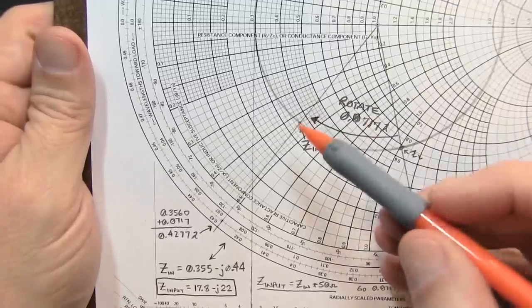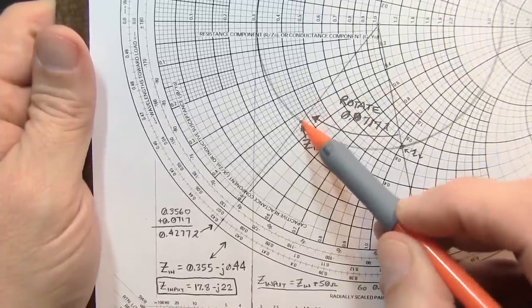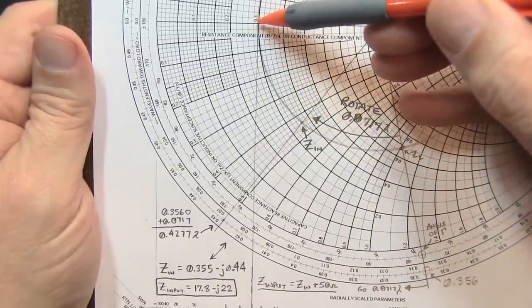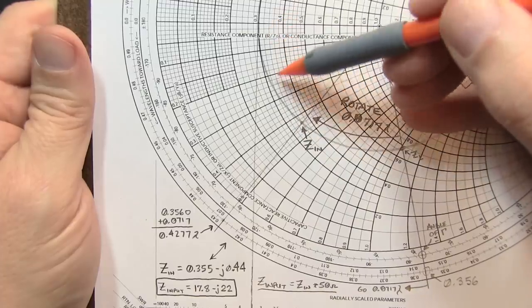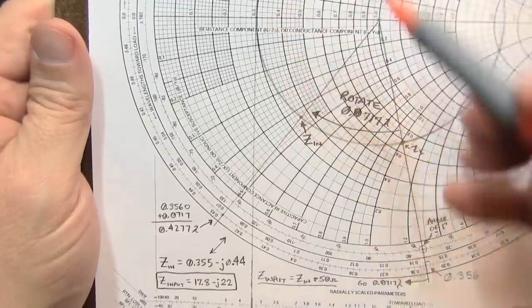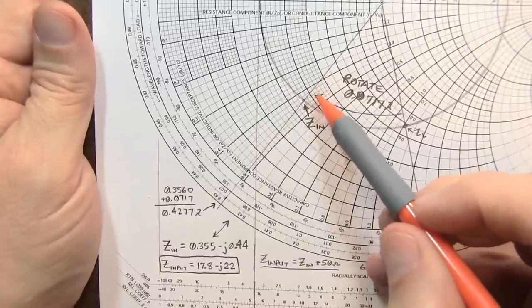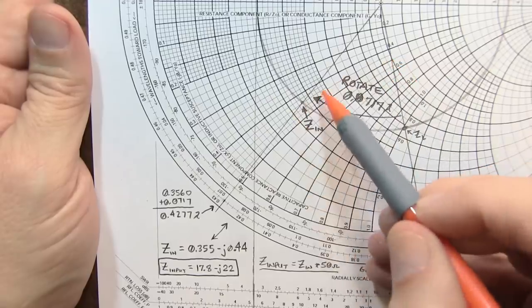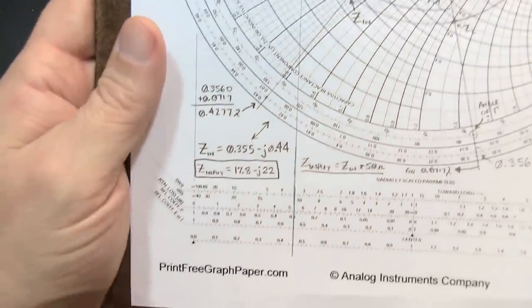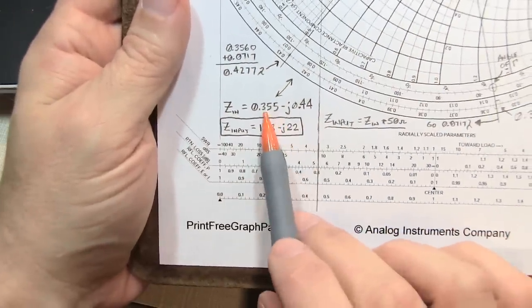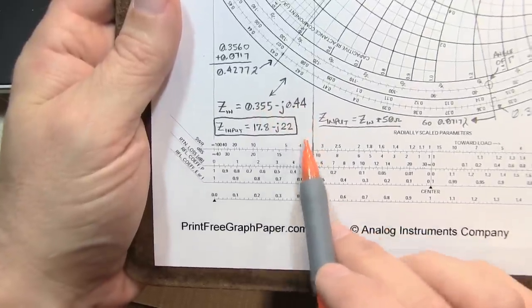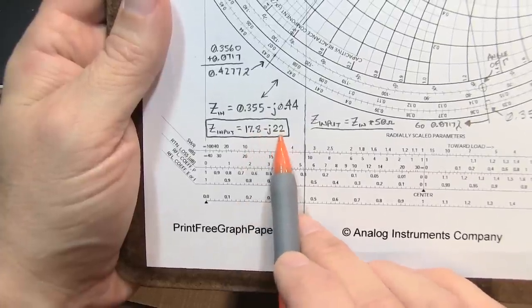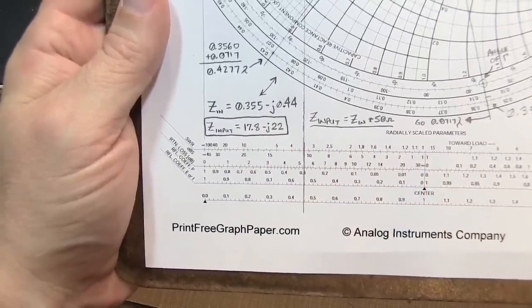We need to determine what that impedance is. Reading off the scales, we're at about 0.355 on the resistive circles and about 0.44 capacitive on the reactance circles. If we unnormalize that, multiply both values by 50, we get an impedance of about 17.8 minus J22 ohms.